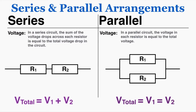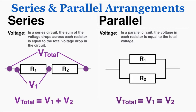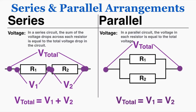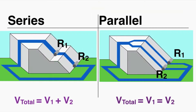The rule for voltage in series and parallel works like this. In series, the sum of the voltage drops across each resistor is equal to the total voltage drop in the circuit — the total drop from R1 to R2 equals the voltage drop across R1 plus the voltage drop across R2. In a parallel circuit, the voltage across each resistor is equal to the total voltage — voltage 1 equals voltage 2 equals the total. This can be explained with the water analogy, where voltage is like the height of the water.